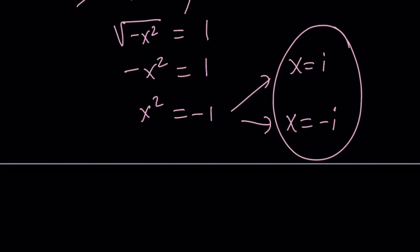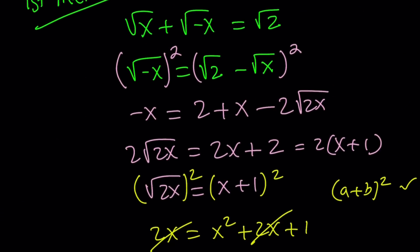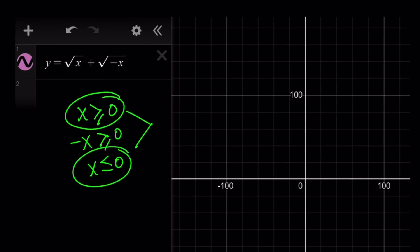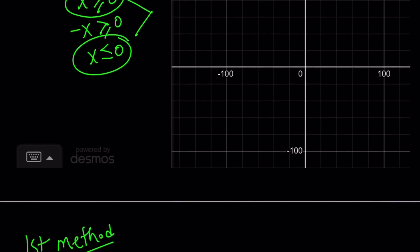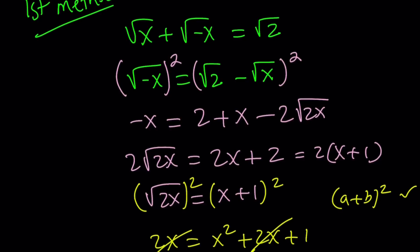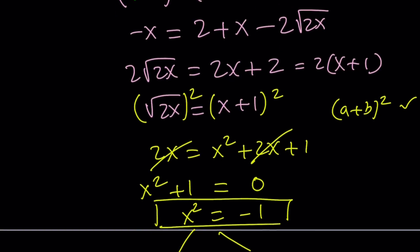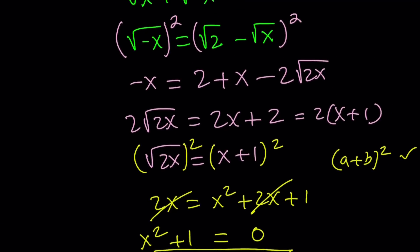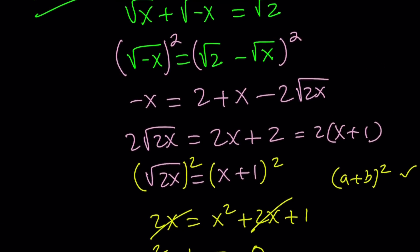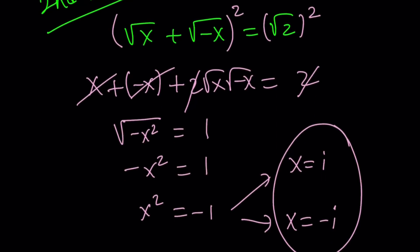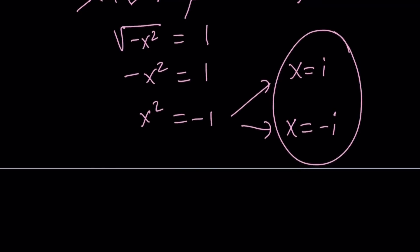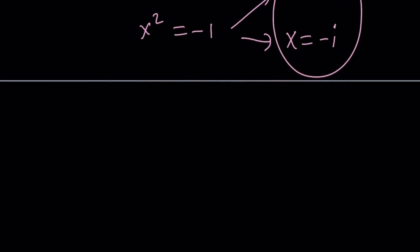Let's recap what we did. We were given this interesting equation and first checked the graph. There's no graph because x can only be zero in the real case, and zero is not a solution. So squaring both sides gave us complex, non-real solutions. The first method involved isolating the square root of negative x; the second method squared both sides without isolating. Either way, we get the same result.